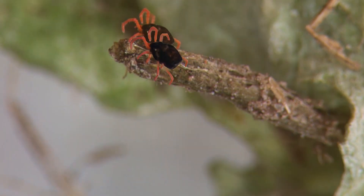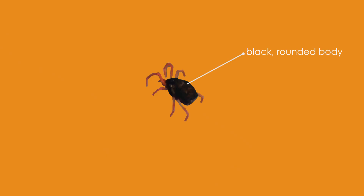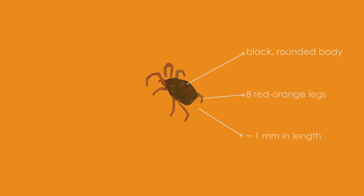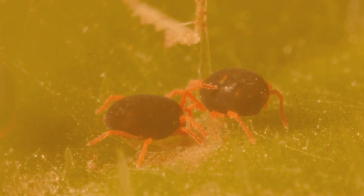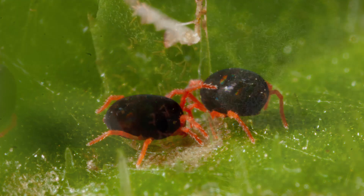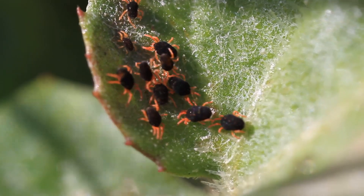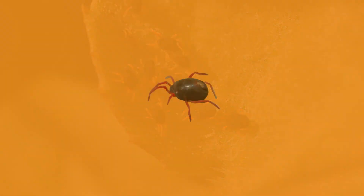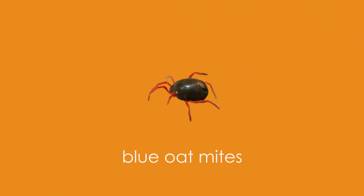The red-legged earth mite has a black, rounded body, eight orange-red legs, and grows to about one millimetre long. This mite's standout feature is its black body which is uniform in colour and has a velvety look about it. The red-legged earth mite is often confused with blue oat mites.